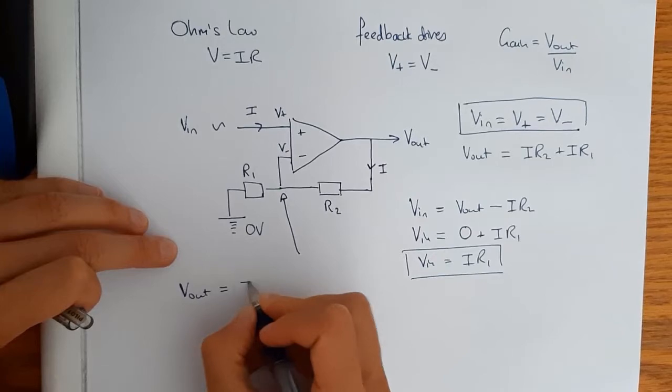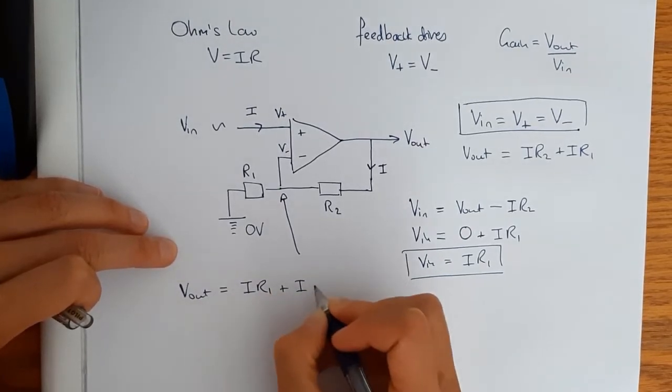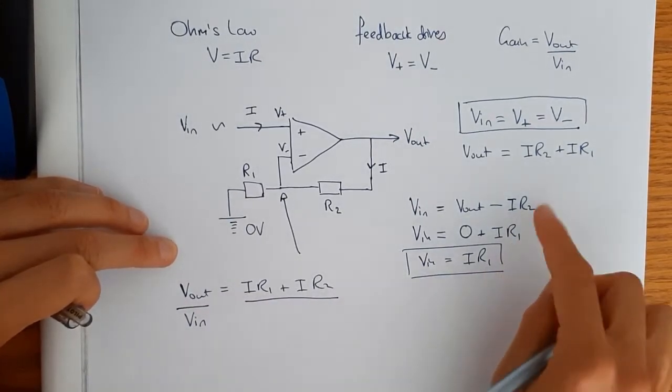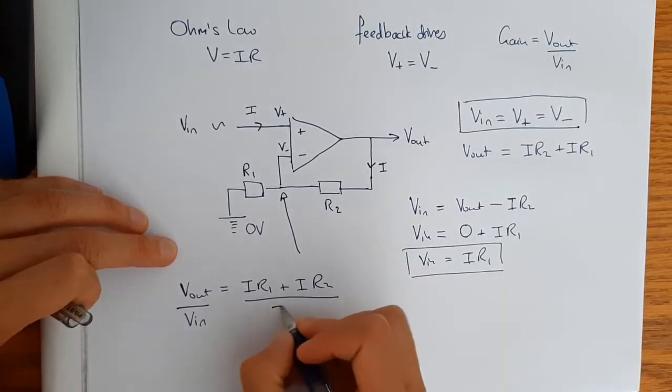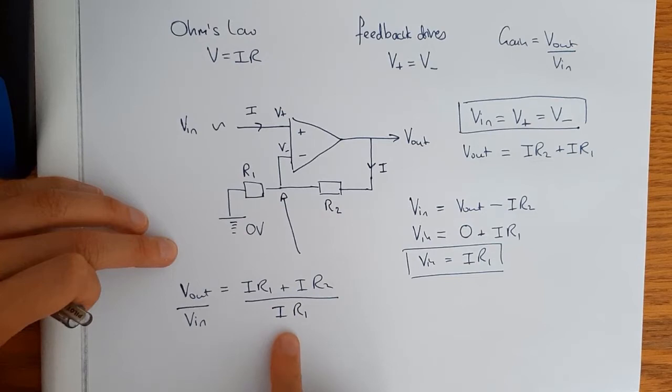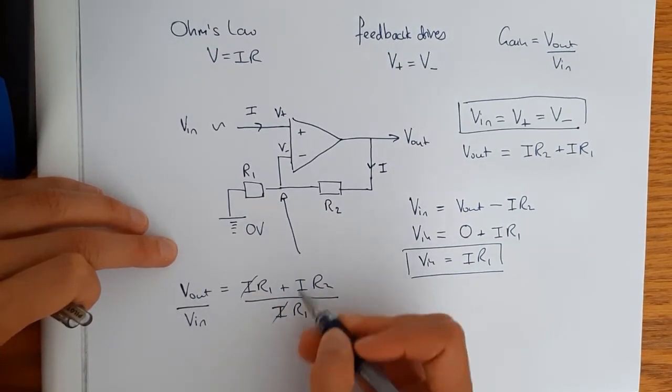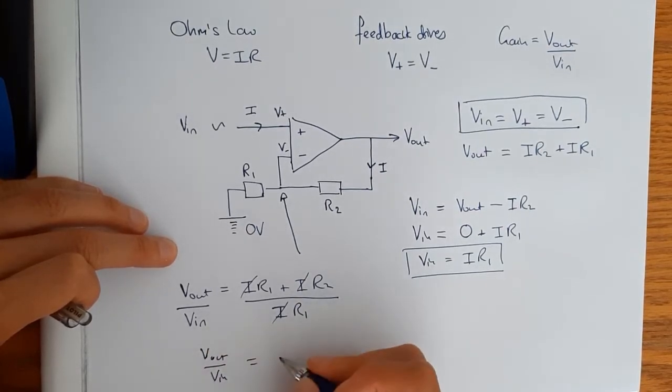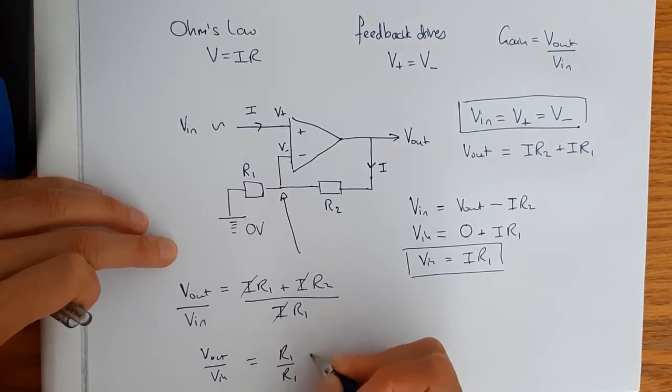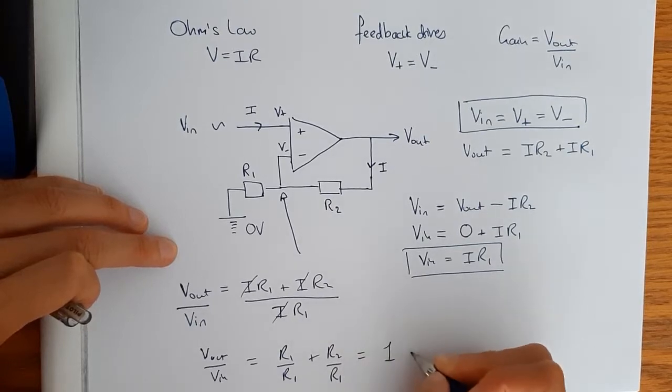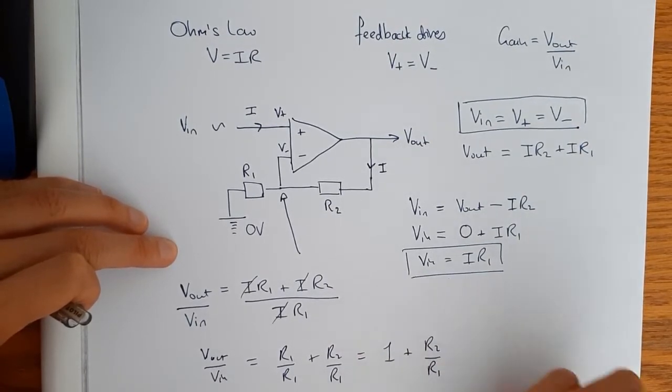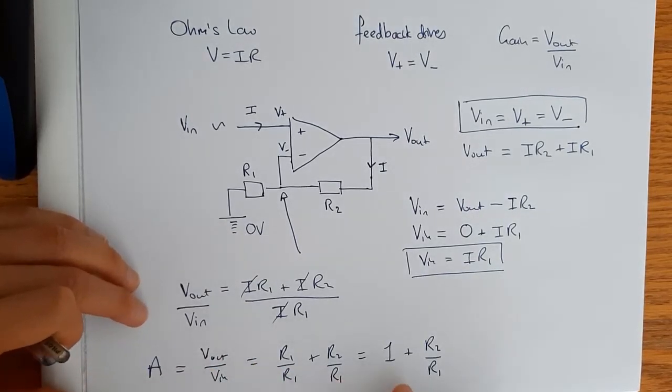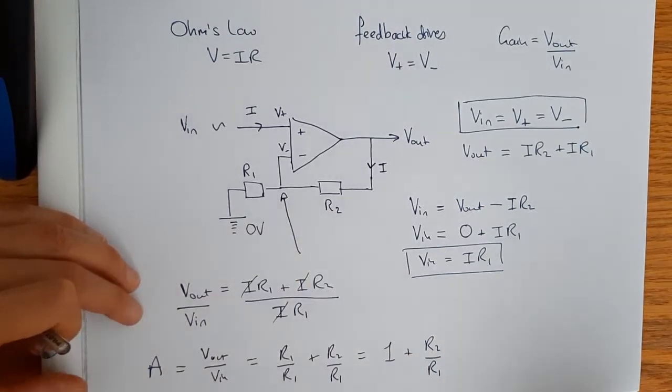So now V_out I know is equal to I R2 and R1. I'll just write them in this order because it's a bit neater over V_in. And we know that V_in, you can use either of these two expressions, but I'm going to use this one here because it just makes the steps easier. So here we end up with this expression and we can now cancel the I's because the current is the same throughout. So we end up with V_out over V_in is equal to R1 over R1, add R2 over R1 which is equal to 1, add R2 over R1. So you can now see how the gain A can be manipulated or controlled by controlling the relationship between these two resistors here.